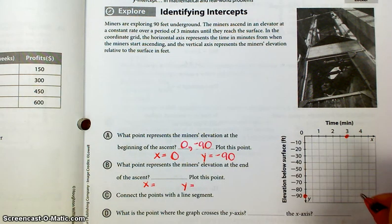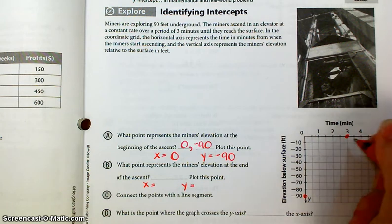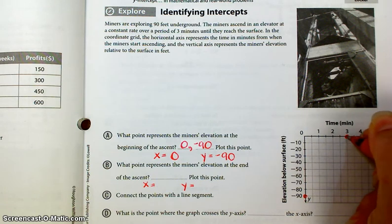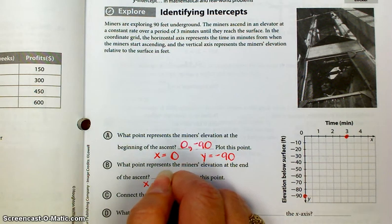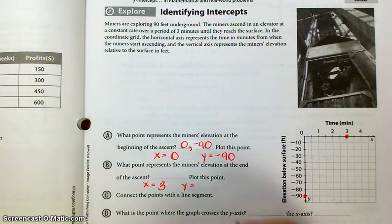What point represents the miner's elevation at the end of the ascent? Well, at the end of the ascent, they are now at the surface, and the information said that that occurs at time equals 3 minutes. So here, 3 minutes have gone by. That's the x value, and their y value is 0 because they're back at the surface.